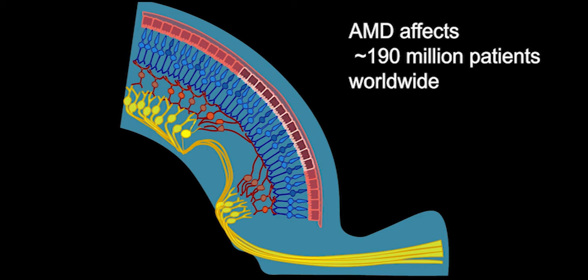In age-related macular degeneration, the layer of retinal pigment epithelium, which provides vital support for the photoreceptors, degenerates. This leads to photoreceptor death and a decline in central vision.